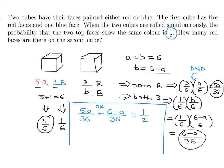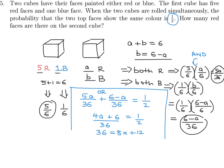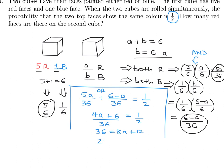Solving for A: 4A plus 6 over 36 equals 1/2. Cross-multiplying gives 36 equals 8A plus 12, so 24 equals 8A, and A equals 3. The second cube has 3 red faces.